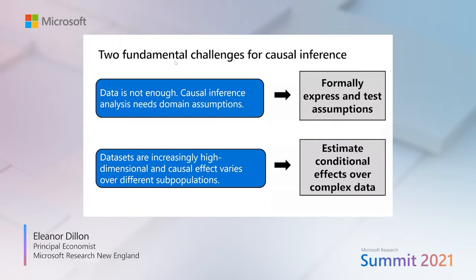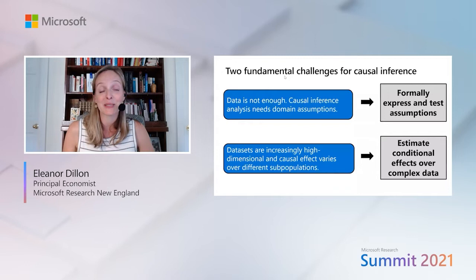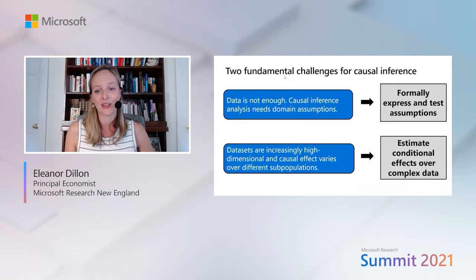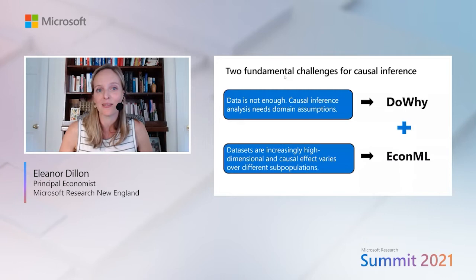Data sets have also become increasingly high-dimensional and large. A lot of traditional economic techniques for causal inference built in very strong assumptions to use simple, transparent models that work with limited data. Our new capacities with machine learning and large data sets allow us to relax some of those assumptions, but it means that models become increasingly non-transparent and difficult to interpret and evaluate. EconML and DoWhy can help with both of these challenges — to help articulate assumptions clearly and implement increasingly complex economic models with more realistic assumptions.